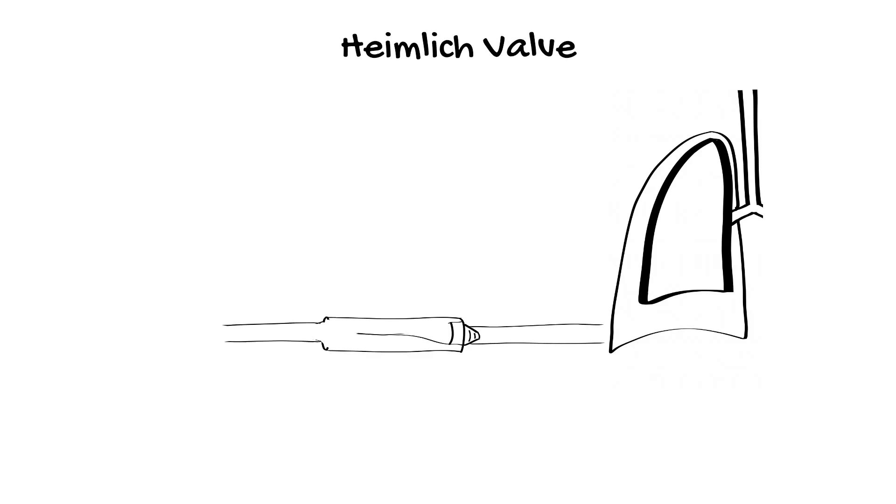Always double check the drain has been unclamped after repositioning or transport because of the risk of tension pneumothorax with a clamped chest drain. In patients with a pneumothorax who are able to mobilize or are being transported, a Heimlich valve can be used instead. This is a one-way valve that allows air to leave the pleural space whilst preventing airflow in the opposite direction. The Heimlich valve avoids the problem of the underwater seal chamber tipping over and allowing air back into the pleural space.